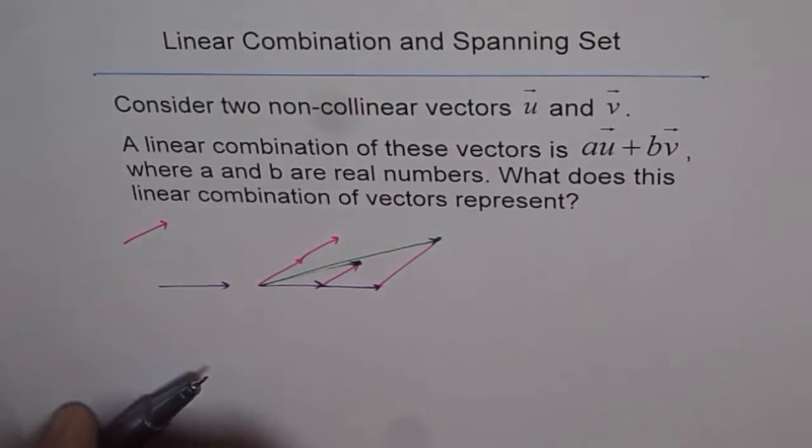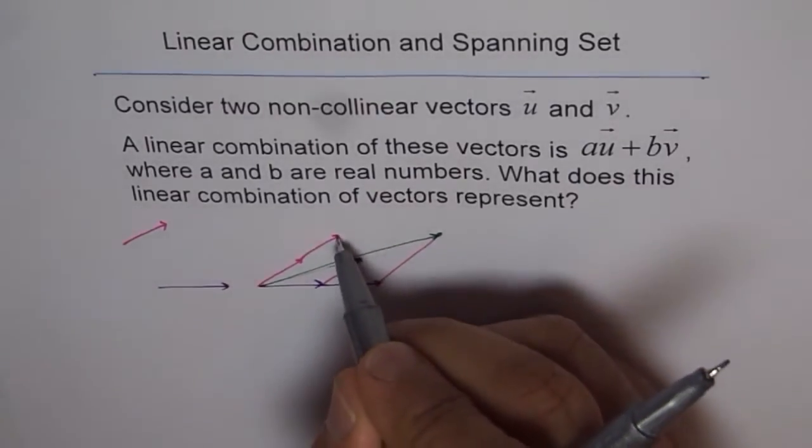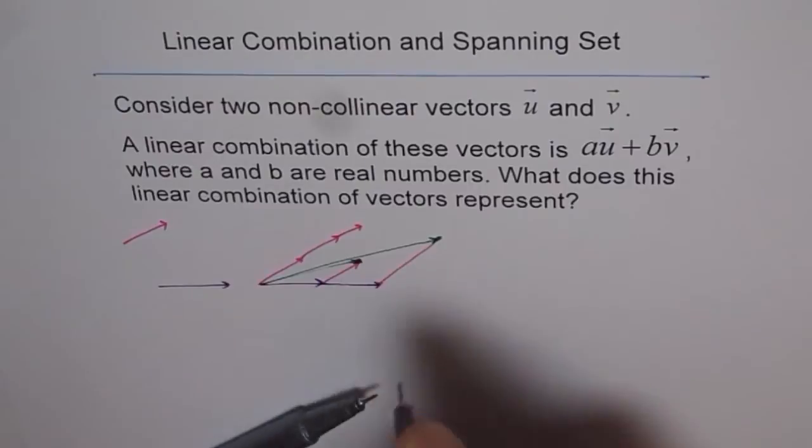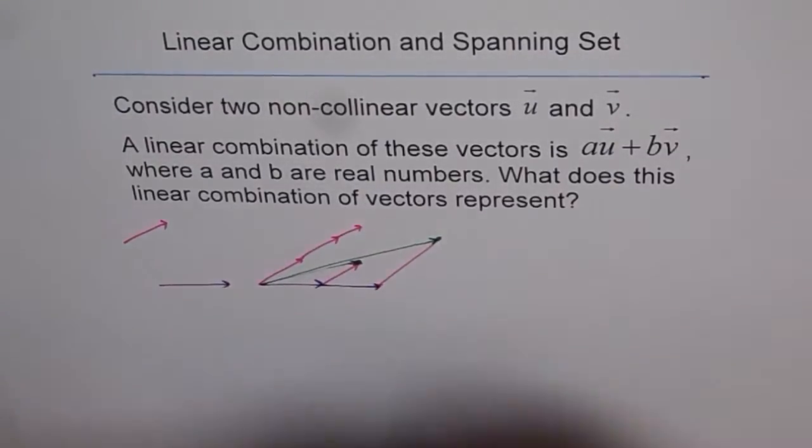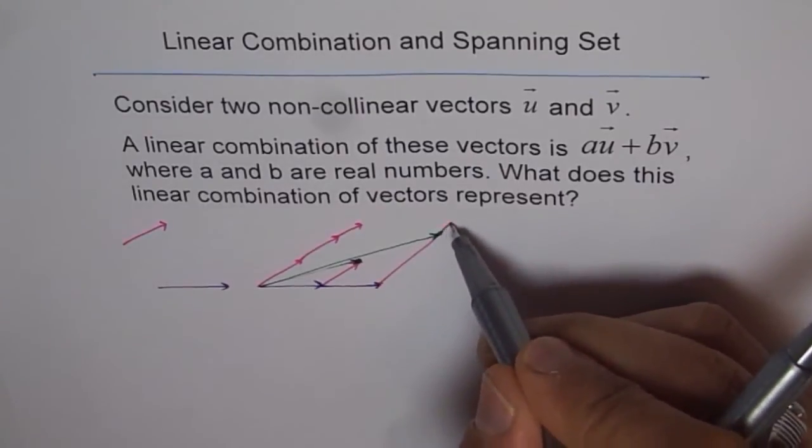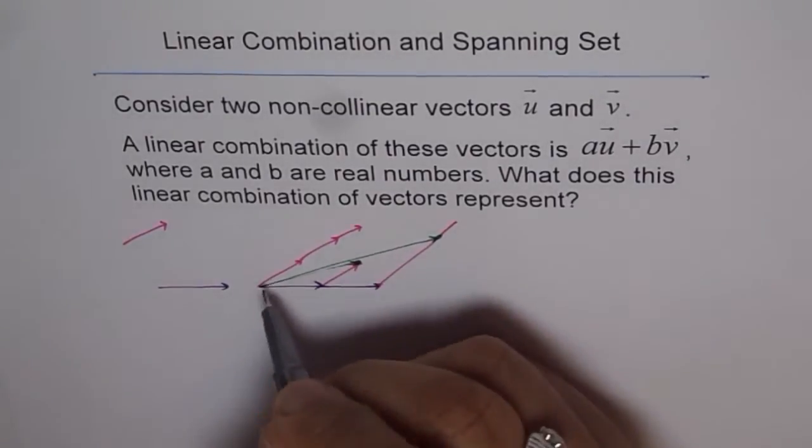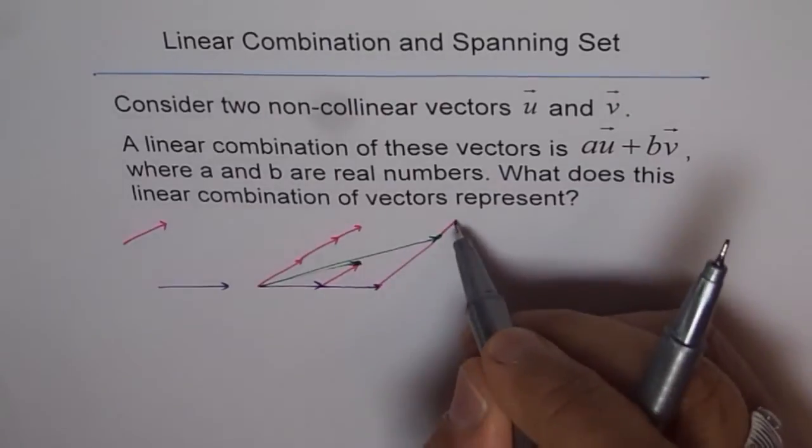Now, similarly, it could be different values. If it is 2 and a half, and let's say it remains at 2, in that case, it is 2 and a half. It will represent a point here.